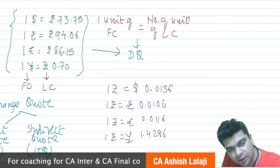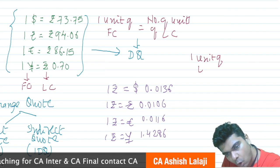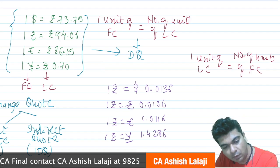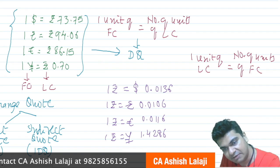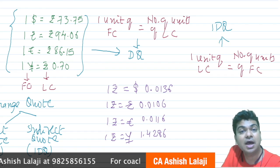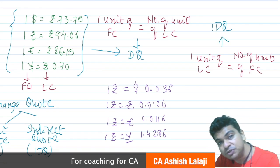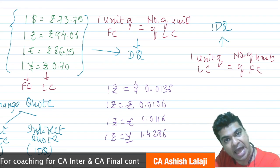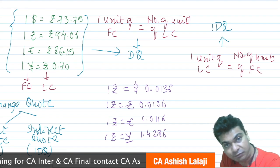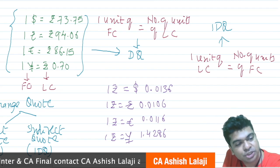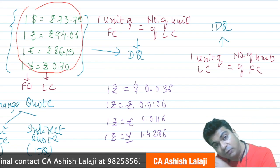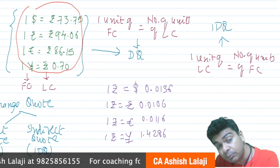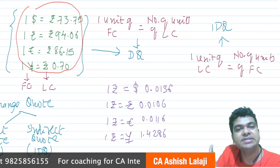In an indirect quotation, one unit of local currency is equal to how many units of foreign currency — that is an indirect quote. In India, the Reserve Bank of India has banned indirect quotes, so no Indian bank will give you an indirect quotation. That is why in India we are habituated with direct quotations only. You have never seen a quote like 'one rupee equals dollar 0.0136' because Indian banks are not allowed to provide indirect quotes.